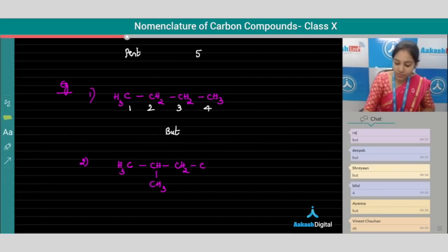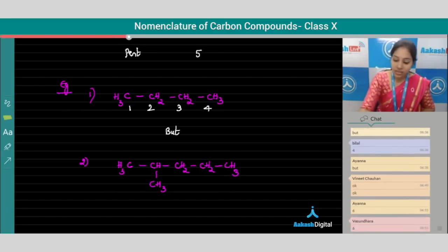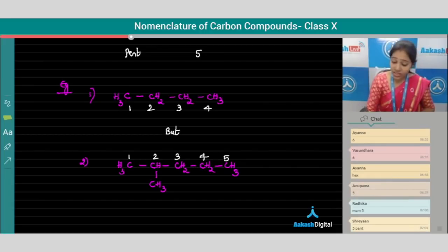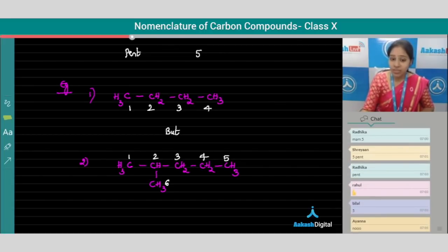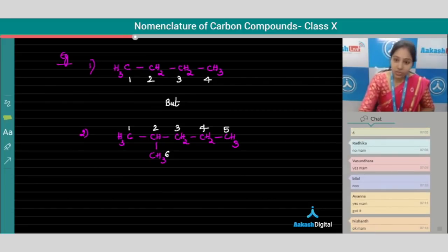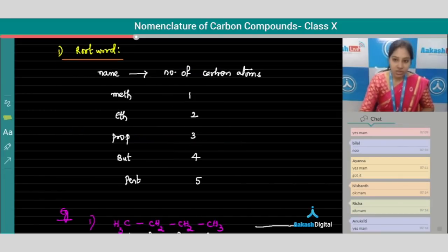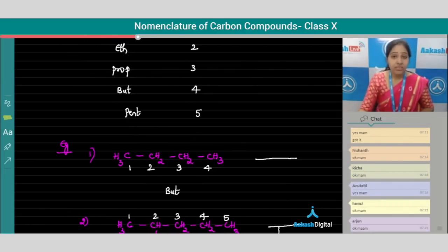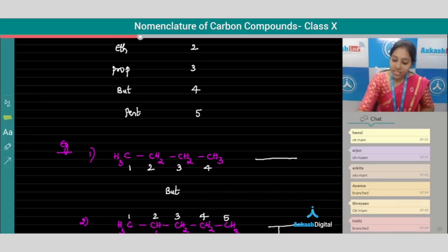Now try to find the root word for this second structure. We can see one, two, three, four, five carbon atoms, and there is also a sixth carbon atom. But this sixth carbon atom is not considered in the root word. If you observe the first structure, it is a linear structure, but the second structure is a branched structure. Whenever we have branched structures, we need to consider the structure in two different ways — a parental chain and a daughter chain.